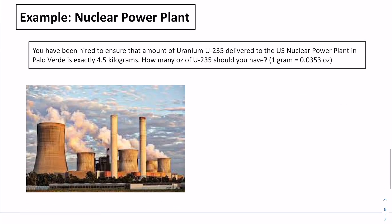Final example: You have been hired to ensure that the amount of uranium U-235 delivered to the U.S. nuclear power plant in Palo Verde is exactly 4.5 kilograms. How many ounces of U-235 should you have? Given that 1 gram equals 0.0353 ounces. We write out what we want to know — ounces — and what we have: 4.5 kilograms.